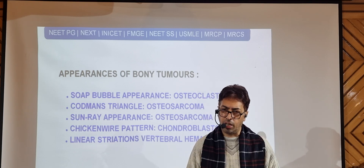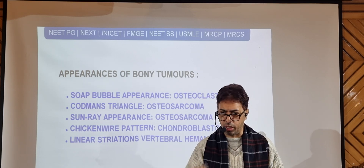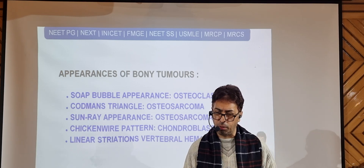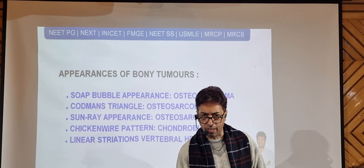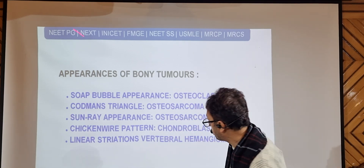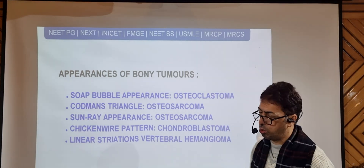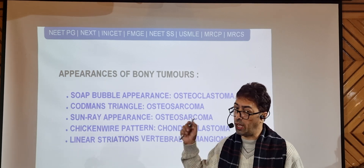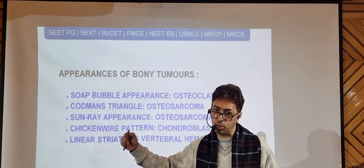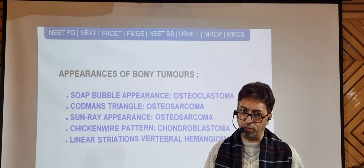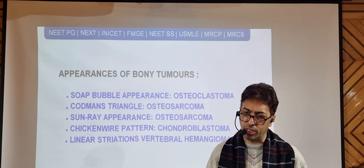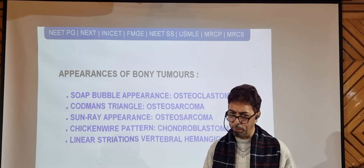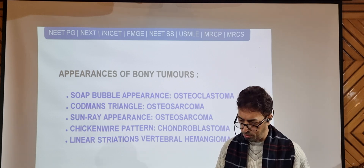A simple question frequently seen is: which bone tumor shows a soap bubble appearance? If you are given a radiograph of a bone with a multiloculated, bubbly appearance at the distal end, you must remember that the soap bubble appearance is seen in osteoclastoma — also known as GCT, or giant cell tumor of the bone. You have to remember the classic association of osteoclastoma with the soap bubble appearance, seen particularly at the terminal ends of long bones.